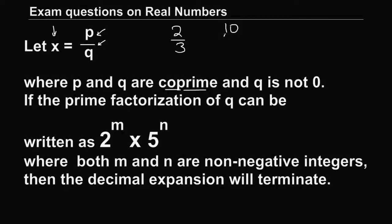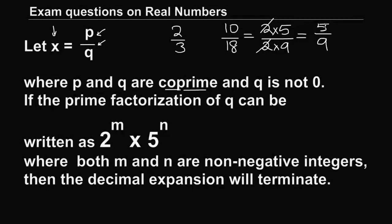Let's take the number 10 divided by 18. Are these co-prime? They are not co-prime because 10 equals 2 times 5, and 18 equals 2 times 9. There is a common factor 2 that we can eliminate, leaving us with 5 by 9. Is 5 by 9 co-prime? Yes, because they no longer share any common factor.